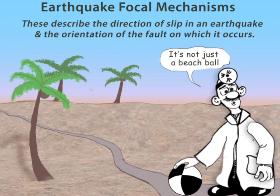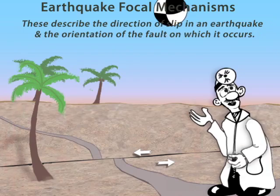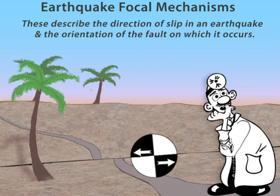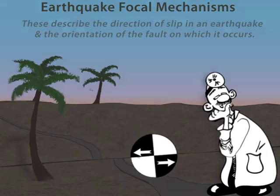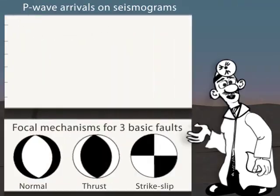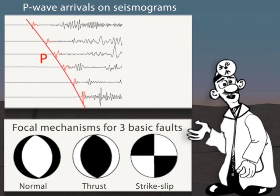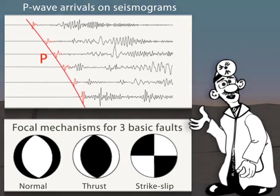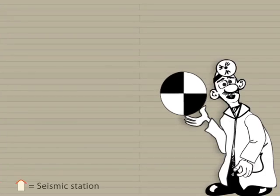When an earthquake occurs, seismologists create graphics of focal mechanisms, informally referred to as beach balls, to show the faulting motions that produce the earthquake. The focal mechanisms are based on the direction of the first arriving P wave. Let's investigate the patterns of P wave arrivals that result from different faulting mechanisms by first considering a strike-slip earthquake.